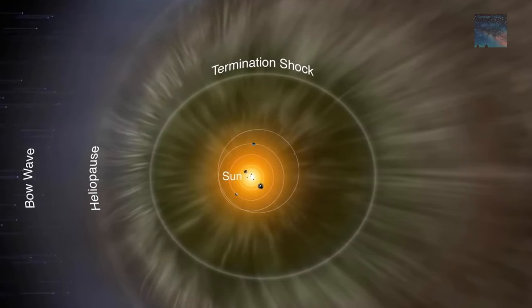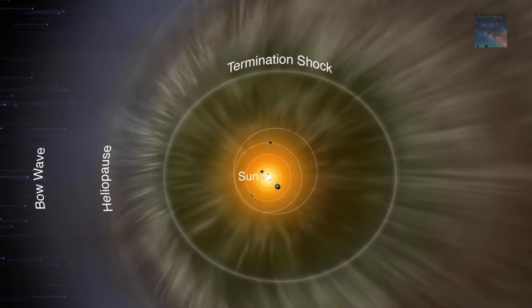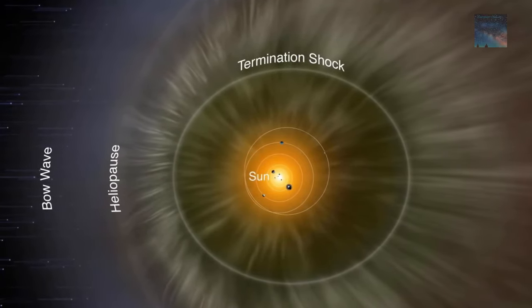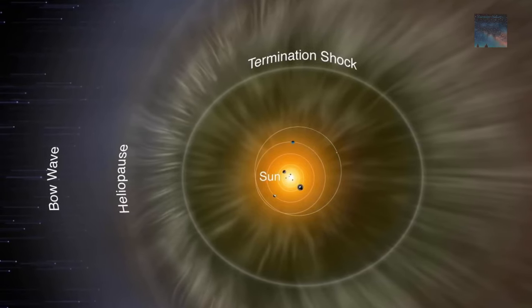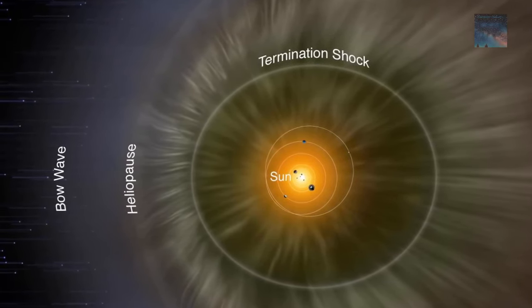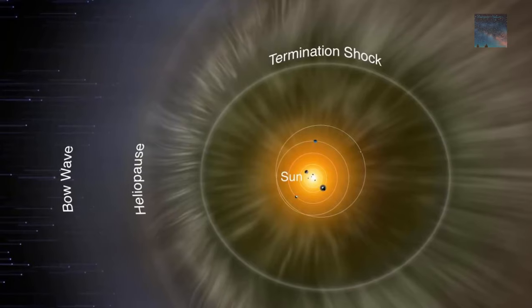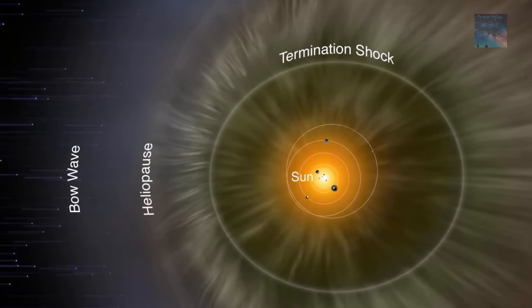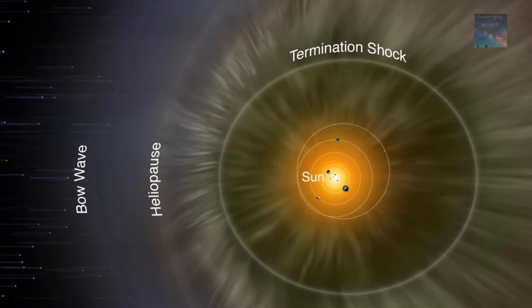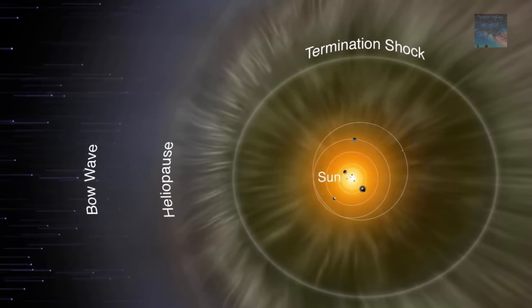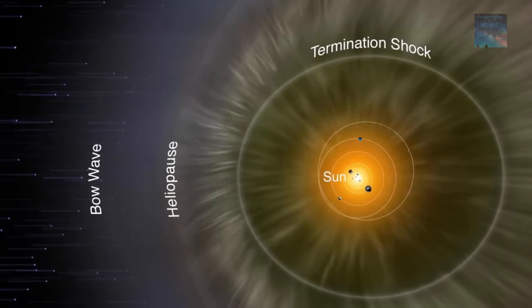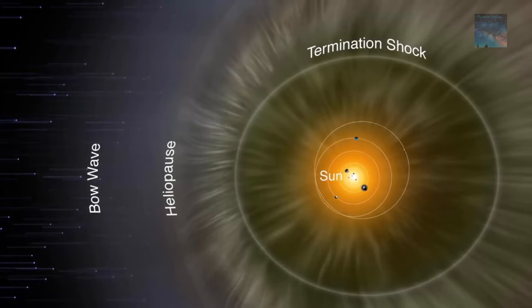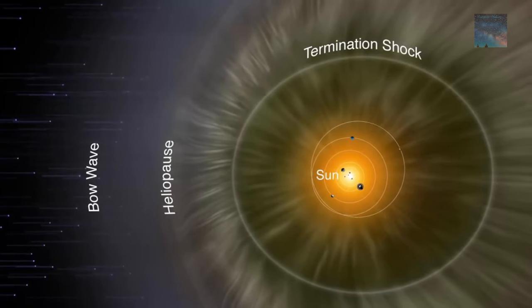Once beyond the termination shock, solar wind particles enter a special limbo zone known as the Helios Heath. While the termination shock is essentially spherical, the edges of the heliosphere are thought to describe more of an arc around the sun as it moves through space, closer to the sun toward the front and extending long behind it, not unlike a comet with a tail.